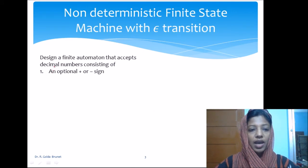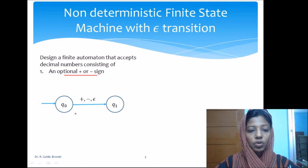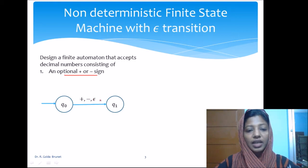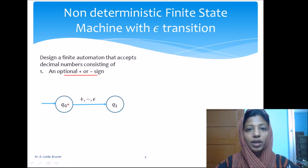To design the FSM, we start with the initial state q0. To handle the optional plus or minus sign, from q0 we either accept a plus or minus and go to q1, or we take an epsilon transition — moving to q1 without consuming any input. This epsilon transition is an exclusive property of ε-NFA, allowing movement between states without accepting any input symbol.